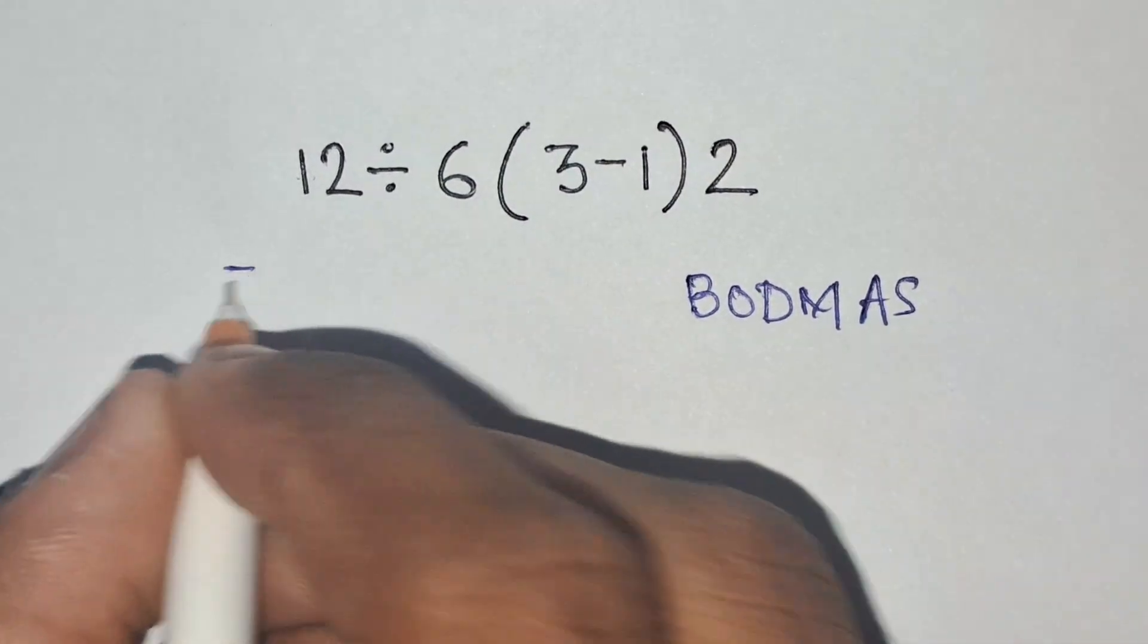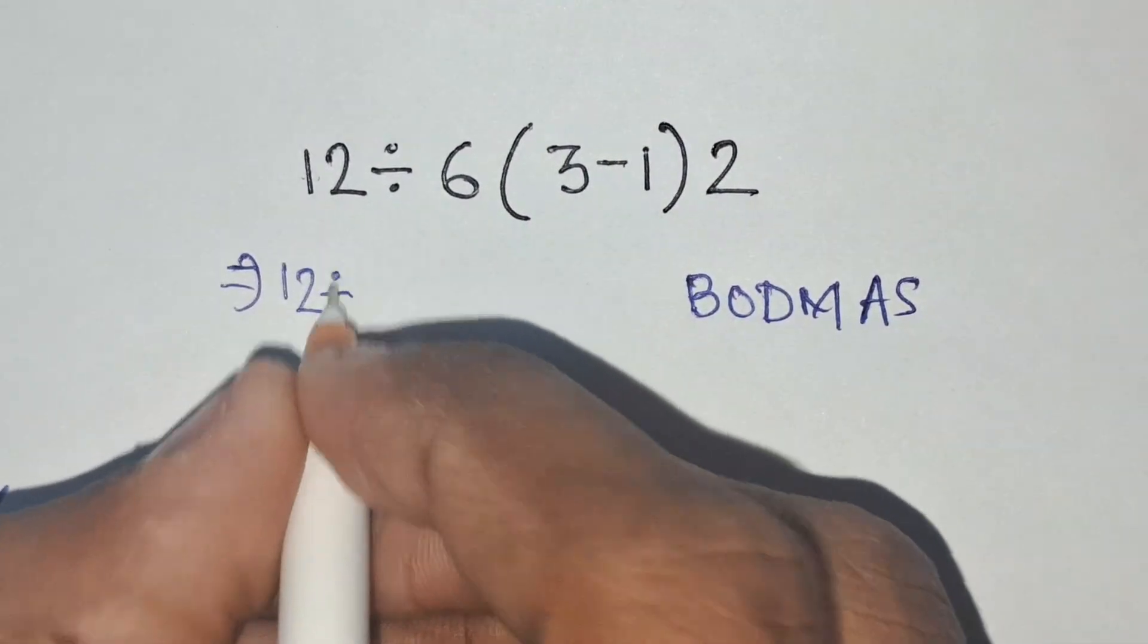Using this identity, we can solve it as 12 divided by bracket at first.